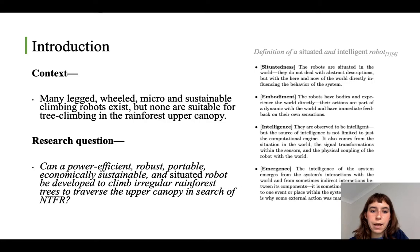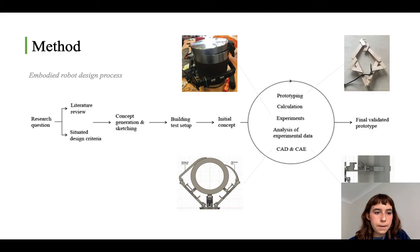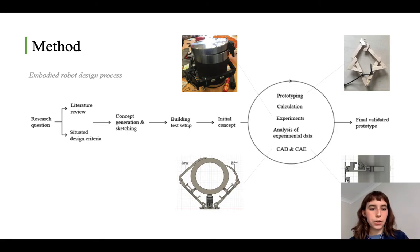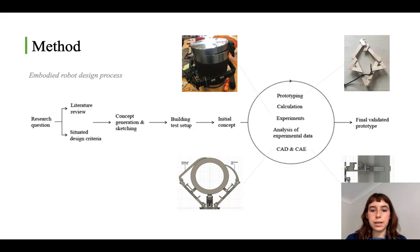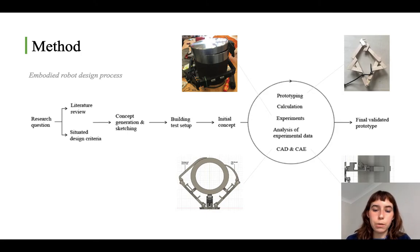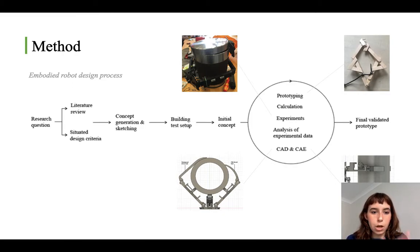For completeness I've added the definition of a situated robot. For my project, this is the process I used — the embodied robot design process. I started by identifying criteria and then took an initial concept to a final validated robot prototype using the methods shown. On the top right you can see an image of a low-fidelity prototype that I made, and on the top left is an early test setup that I used.